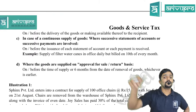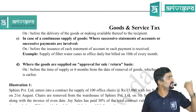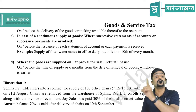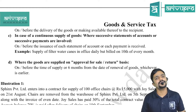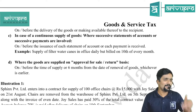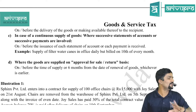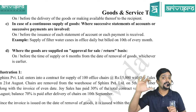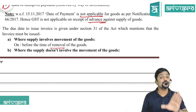Next, where the supply does not involve movement of goods — for example, when you go to a store and purchase goods there — in that case the invoice must be issued on or before the delivery of goods or making them available to the recipient. Normally billing happens on that day itself. Please don't confuse this with place of supply; here we are discussing the due date to issue invoice — within what date should the supplier issue the invoice.